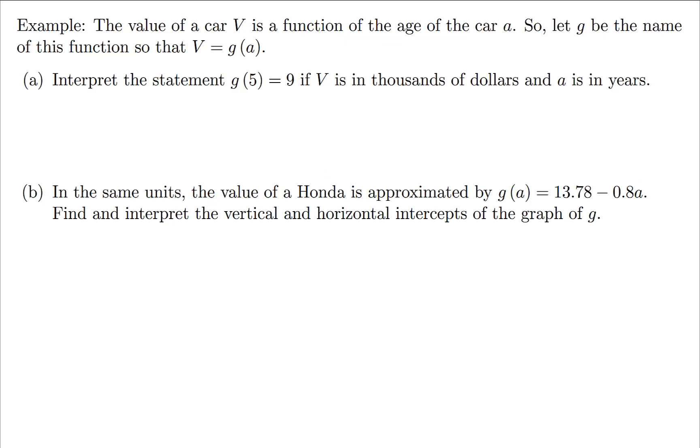Here's another example of interpreting a function. The value of a car is a function of the age of the car. We'll call this a function g because g is the next letter after f. If g(5) = 9, that means a is 5 and V is 9. V is in thousands of dollars and a is in years. So just write a sentence that puts five years together with $9,000: After five years, the vehicle is worth $9,000.